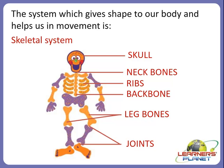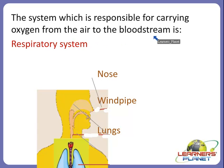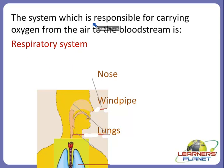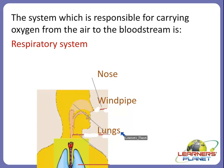The respiratory system, or the breathing system, is responsible for carrying oxygen from the air to the bloodstream. It includes the nose, windpipe, and lungs. As you can see here, this is the nose, this is the windpipe, and a pair of lungs are present in our respiratory system.